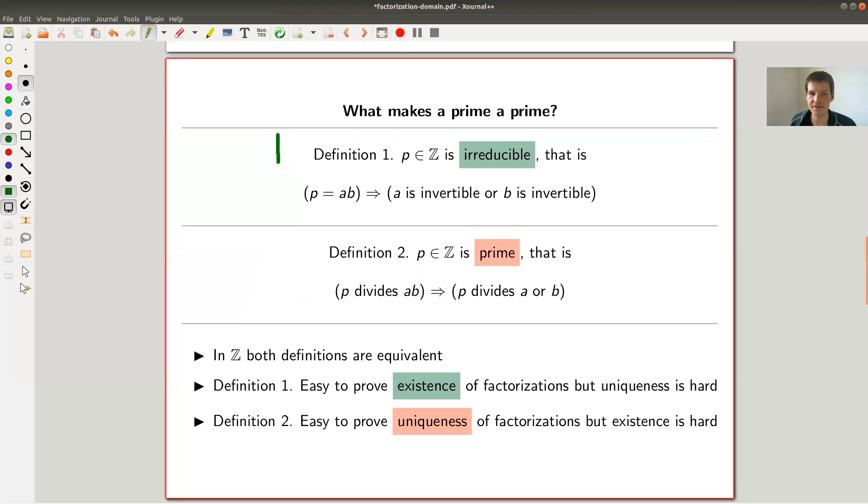So this is, I think, what you see most of the time, the top one. And the bottom one is kind of the definition then of prime in a general ring. So let's have a look.